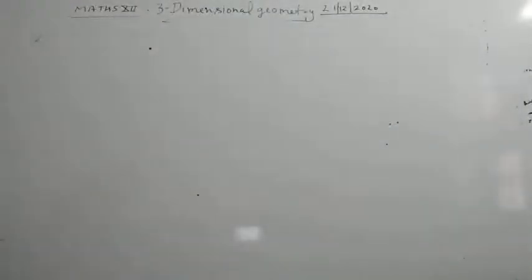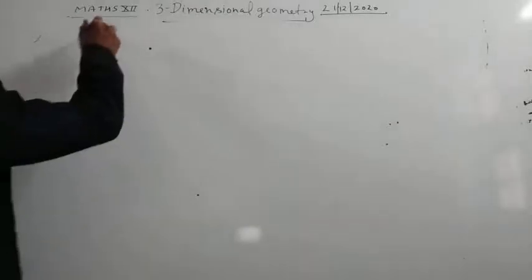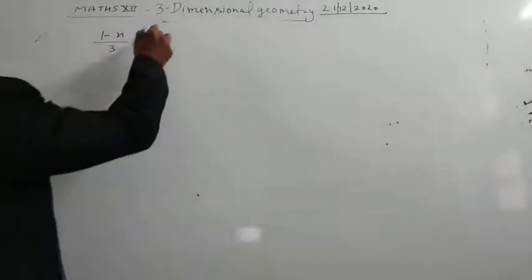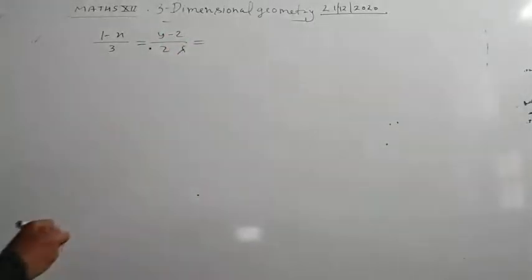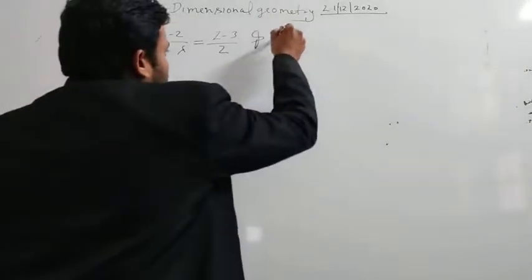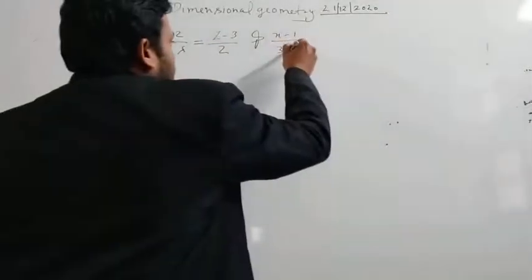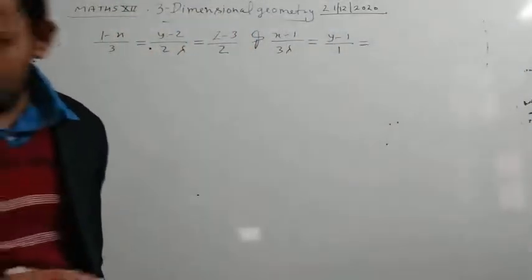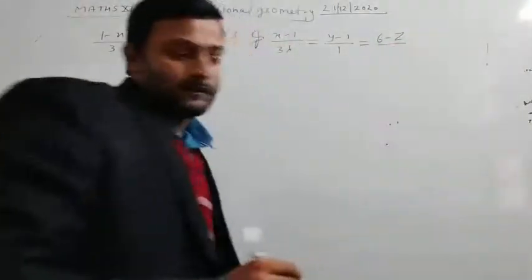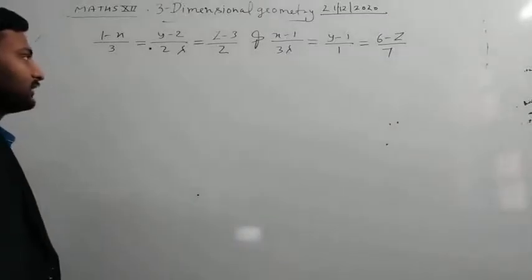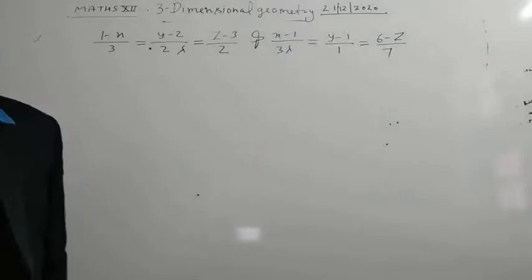First question is: find the value of lambda for the line (1 minus x)/3 = (y minus 2)/(2 lambda) = (z minus 3)/2, and (x minus 1)/(3 lambda) = (y minus 1)/1 = (z minus 6)/(-7). Find the value of lambda so that these two lines are perpendicular to each other.